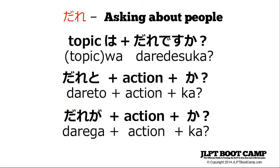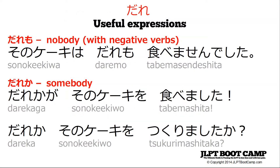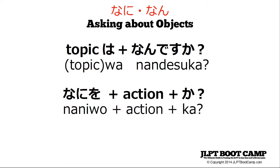Quick review: with 'dare,' you can use some topic plus 'wa' plus 'dare desu ka' — who is this person? 'Dare to' plus action plus 'ka' — who are you doing this with? 'Dare ga' plus action — who did this action? And with 'dare,' you can make 'nobody' with 'dare mo,' and 'somebody' with 'dare ka.' You don't need a particle with 'dare ka,' though you can use one to make it clear. And finally, 'nani' and 'nan' — topic 'wa' plus 'nan desu ka' for what is this thing, and 'nani o' plus action 'ka' for what is the object you are doing something with.